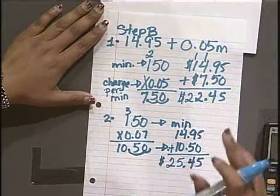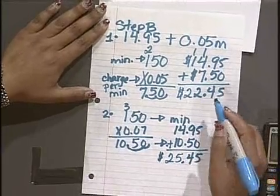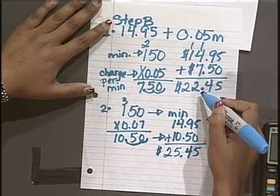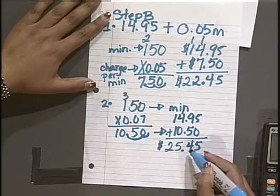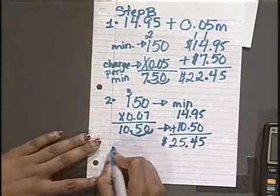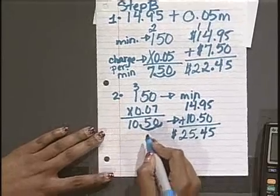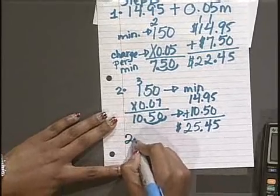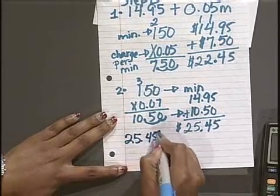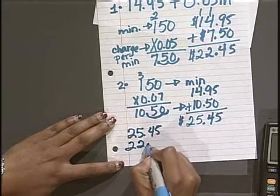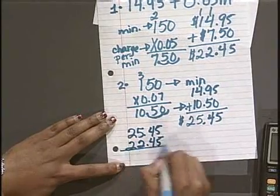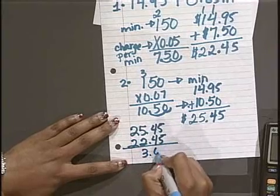So now they're charging us $25.45. Now they asked how will the changes affect Amanda's telephone plan. I'm looking and I see that we have $22 for the first plan. And $25 for the second plan. So it's going to change her plan by $3. There's a difference of $3 there. Let's show you. $25.45. And you're taking away $22.45. There's a $3 difference.